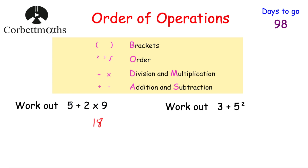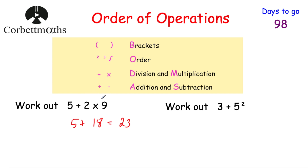Beneath 2 times 9 we put 18, and we still have our 5 plus in front. So we've got 5 plus 18, and now we've just got an addition. 5 plus 18 is equal to 23. You wouldn't do 5 plus 2 first to get 7 and then do 7 times 9 — that's not the right order of operations. You have to do the multiplication before the addition.